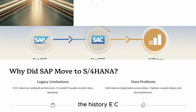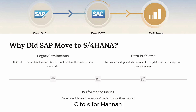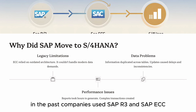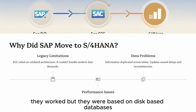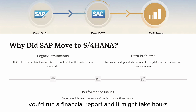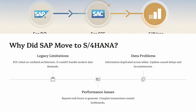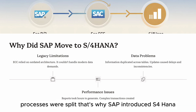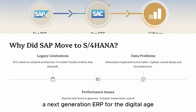The History: ECC to S/4 HANA. In the past, companies used SAP R/3 and SAP ECC. They worked, but they were based on disk-based databases like Oracle or IBM DB2, which created bottlenecks in performance. You'd run a financial report and it might take hours. Data duplication was common and processes were split. That's why SAP introduced S/4 HANA — a next-generation ERP for the digital age.